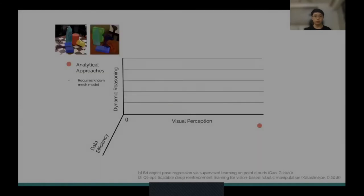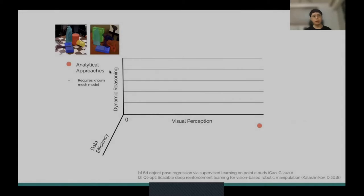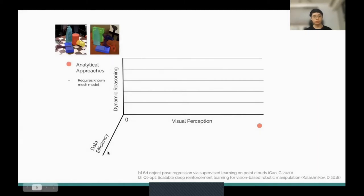Carrying all those challenges, we have a three-dimensional metric: dynamics reasoning, visual perception, and data efficiency. The traditional analytical planning approaches often require a known mesh model to perform pose estimation and planning. They are pretty good at dynamics reasoning and require no data, so they have high data efficiency. But they cannot handle unseen objects with visual inputs.